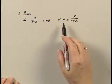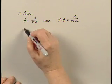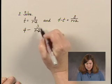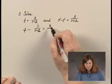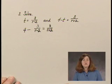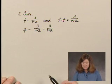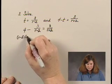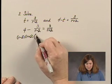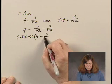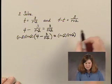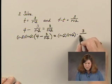Since t equals three over r minus two, I'll substitute that for t in the second equation and then solve for r. I have four minus three over (r minus two) equals three over (r plus two). Multiplying both sides of the equation by the least common multiple of the denominators, which is (r minus two) times (r plus two), I have (r minus two)(r plus two) times the left side, which is four minus three over (r minus two), equals (r minus two)(r plus two) times the right side, three over (r plus two).